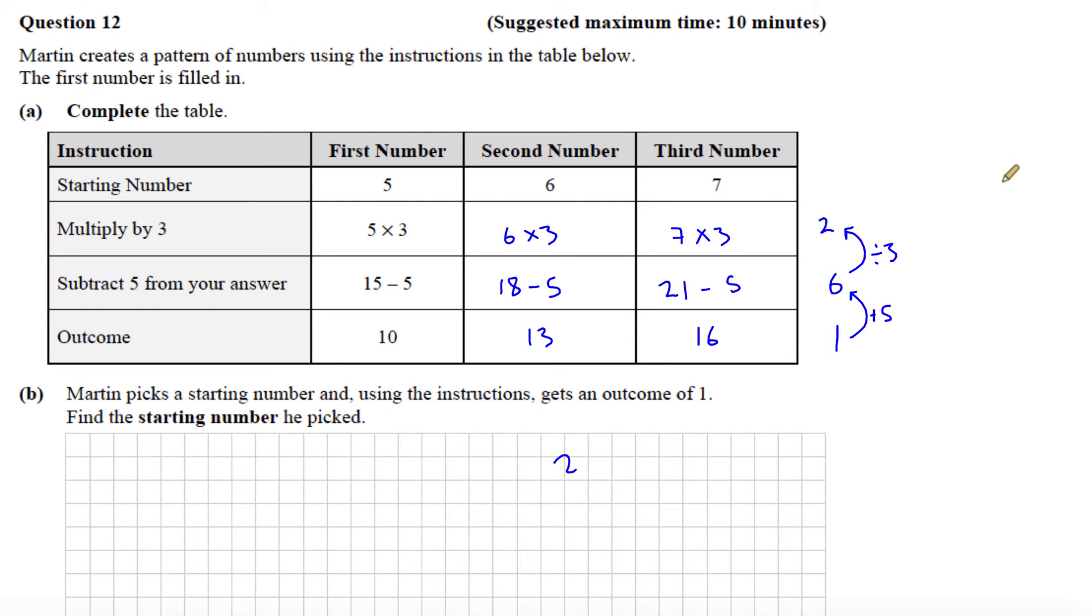Let's have a look here. Imagine our starting number was k. We have to work our way down. So k multiplied by 3, well, that gives us 3k.